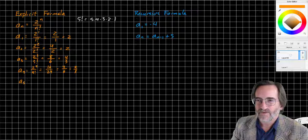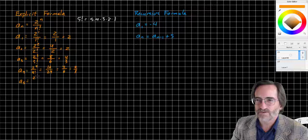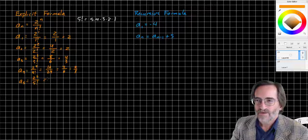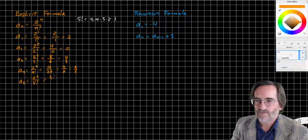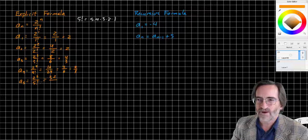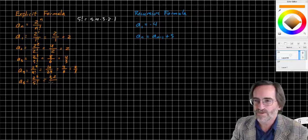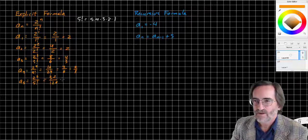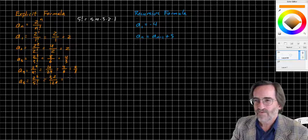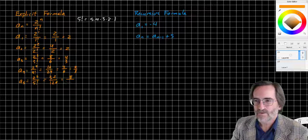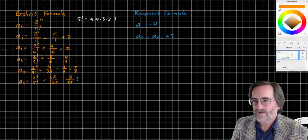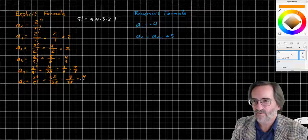And A sub 5, we'll stop here, is 2 to the 5th over 5 factorial. 2 to the 5th is 32. 5 factorial is going to be 5 times 24, which is 120. And let's divide by 4. We get 8 over 30. And I can divide by 2 and get 4 over 15.